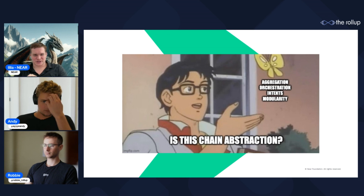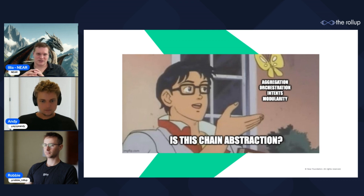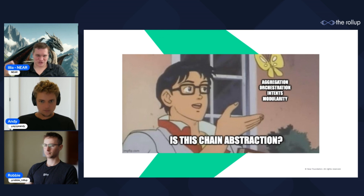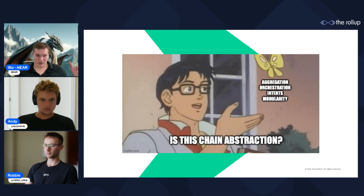The reality is all the things people are talking about — modularity, aggregation, intents, orchestration — are all chain abstraction. Chain abstraction is what we're trying to achieve; those are the ways we're achieving it, the hows. Polygon is aggregating liquidity to allow chain abstraction. Intents allow someone to say what they want without explaining how it will be executed. Modularity is a way to launch independent environments, but then you need to abstract them to provide the experience.